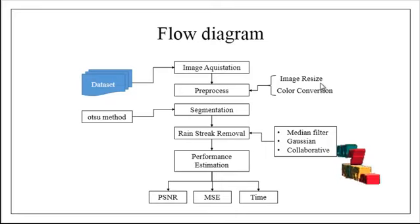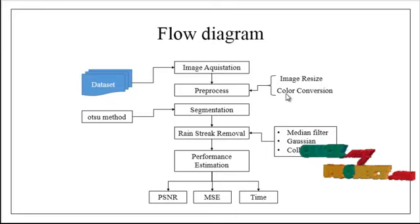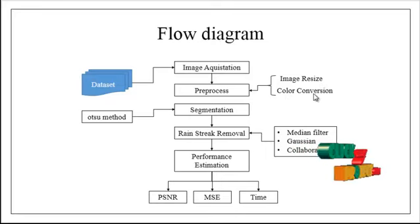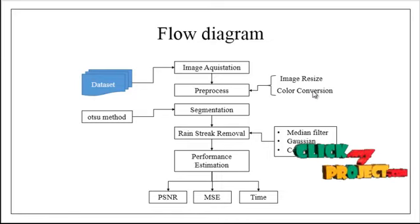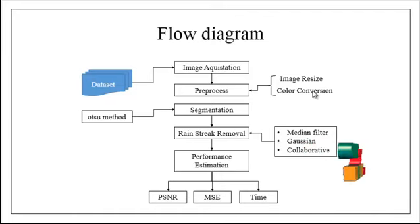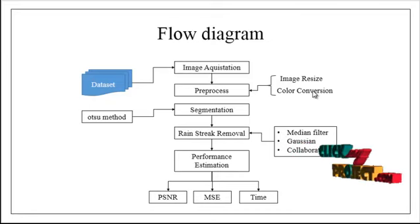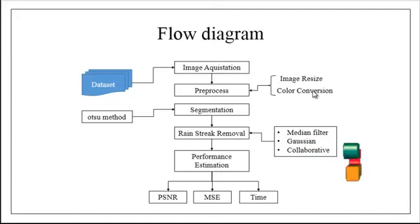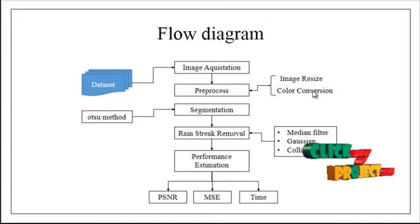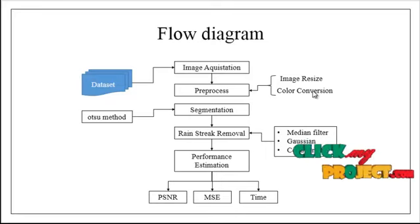After changing the dimensions, we apply the color conversion method to find out where the exact rain streak is present. Initially, it predicts the color variations between the rain streak regions and the normal regions. After estimating the rain streak regions, we do the segmentation step. In segmentation, the rain streak regions are extracted separately, and the other regions without rain streaks are extracted separately — these are considered the background and foreground.